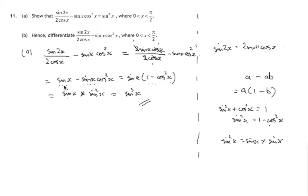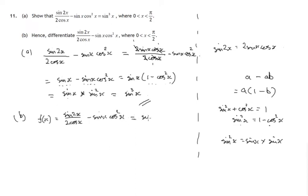Let's have a look at part B now. Hence differentiate. So let's call this big function that we worked on — sine 2x over 2 cosx — let's call that f of x. And what we're required to do: we now know it equals sine cubed x, and we're required to differentiate it. I'm going to write this as sine x cubed.